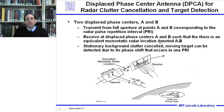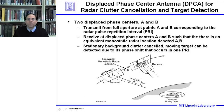Let's consider the displaced phase center antenna, DPCA, technique for radar clutter cancellation and target detection. Consider the diagram shown here, where we have a moving DPCA array platform and a moving target with respect to the background clutter of the earth. We're going to use the fact that the target is moving and has some velocity to pull out the target signal with respect to the stationary or fixed clutter.